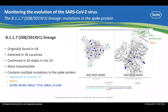More recently, another variant of concern is B.1.1.7, originally found in the UK. As of February 2021, it has spread to over 16 countries, and in the United States there have been confirmed cases in 42 states. It is more transmissible and contains multiple spike mutations. The image to the left shows the spike protein with mutation locations indicated, and the image to the right is the side view. Of all the spike mutations, N501Y is most concerning because it is located in the receptor binding domain — the motif that directly interacts with the human ACE2 receptor.